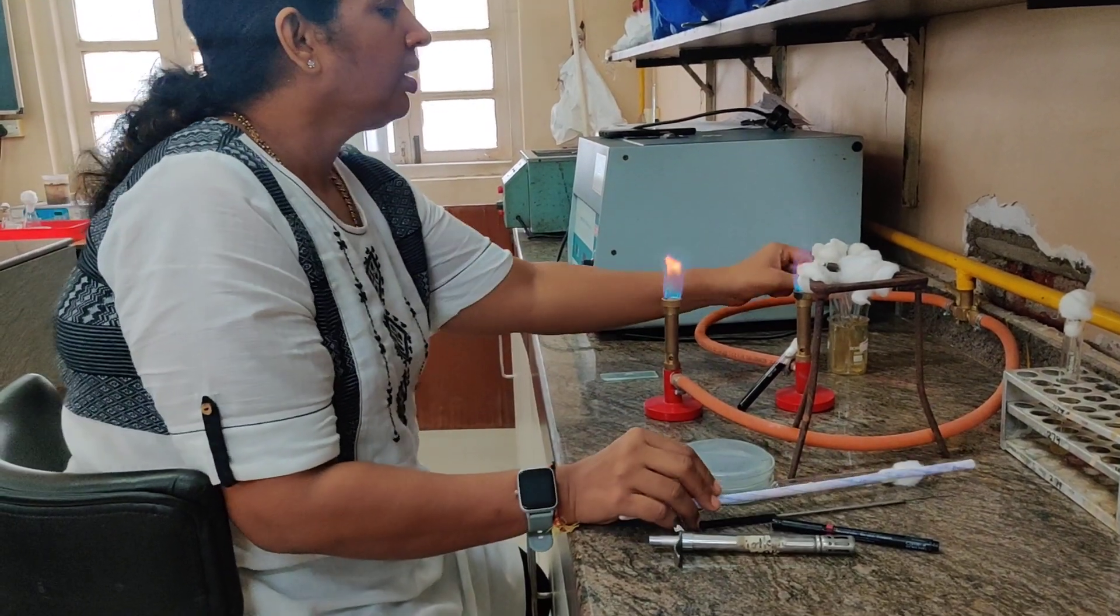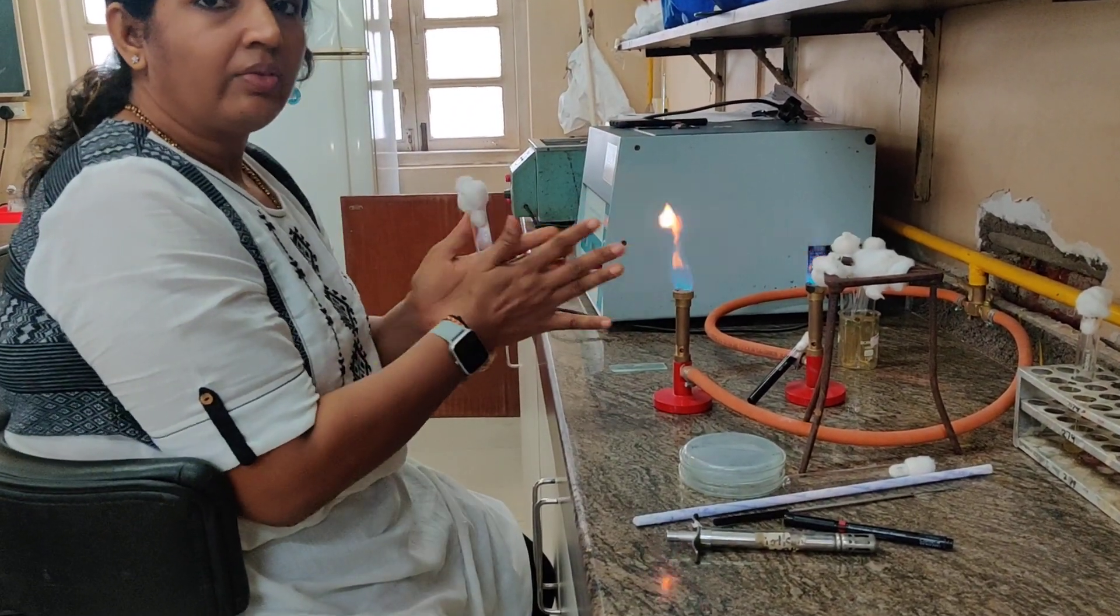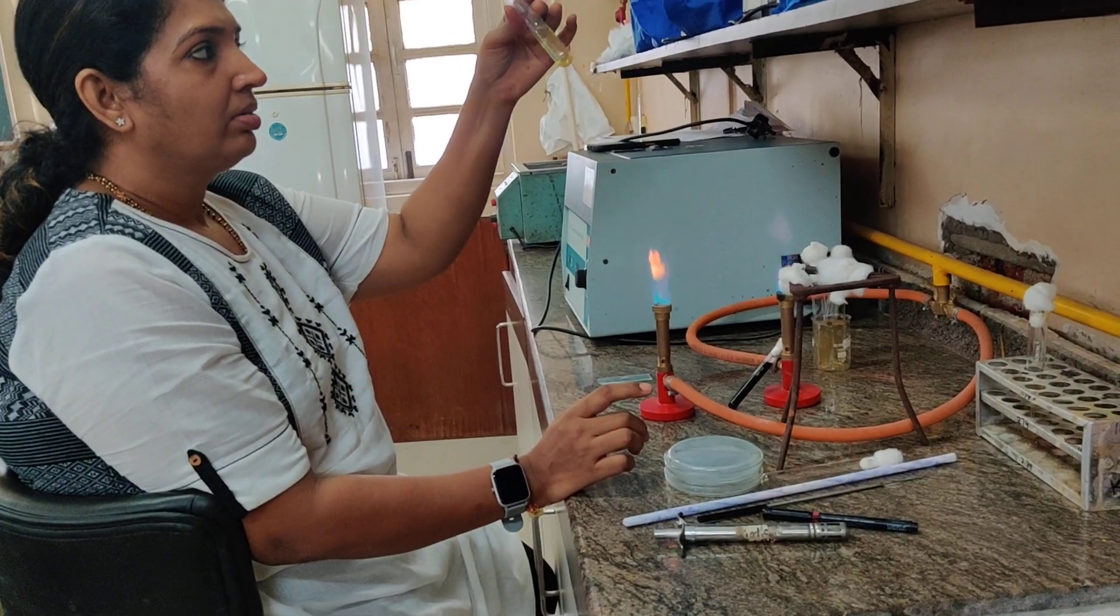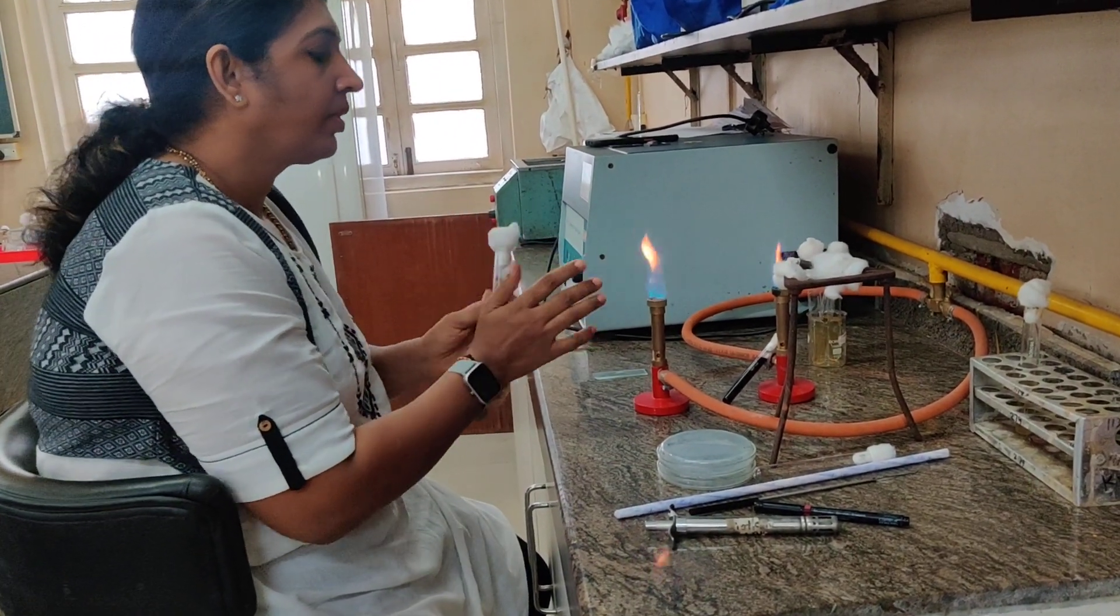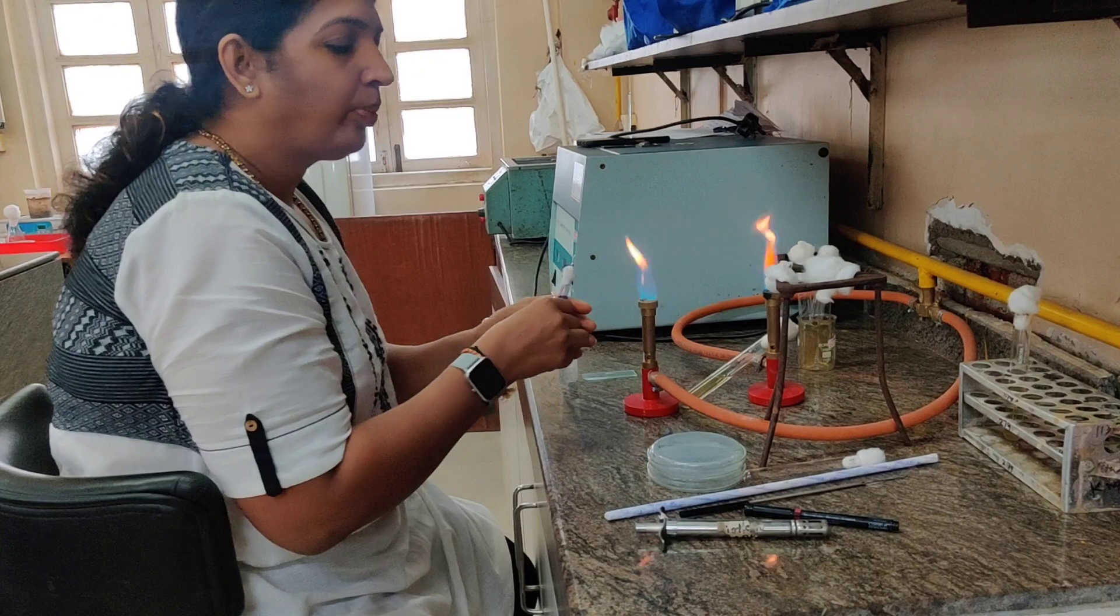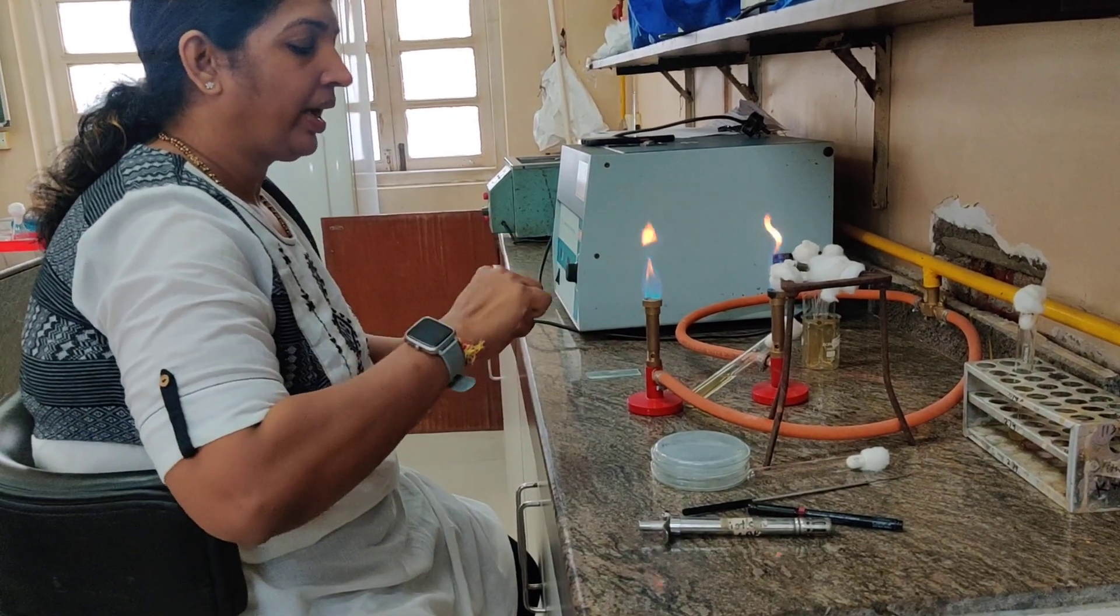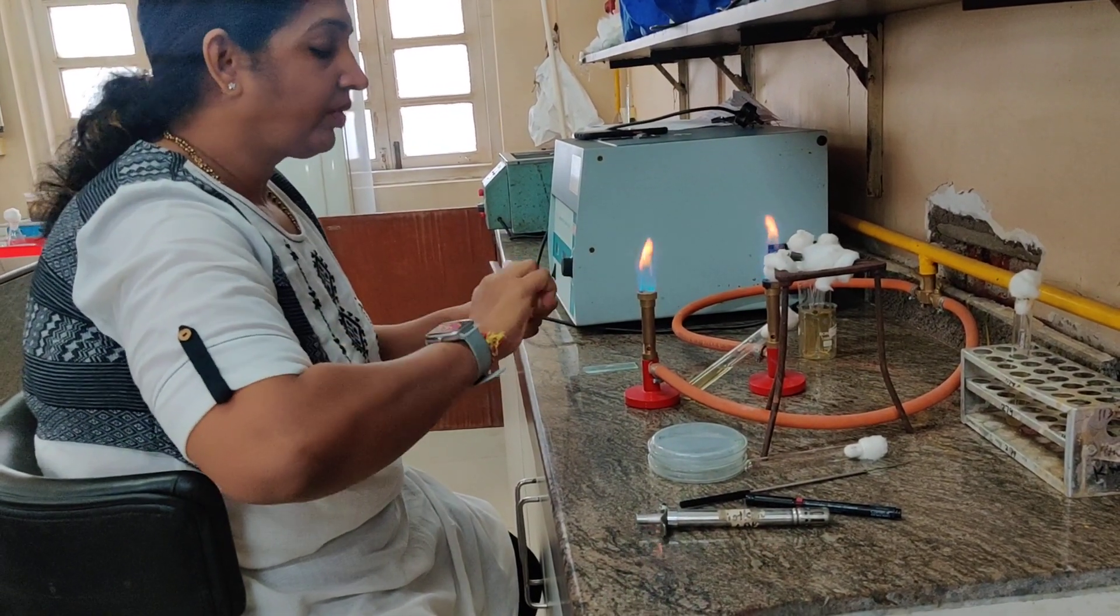To begin with the technique, we need a 10 ml nutrient agar butt which is molten. To this we are going to add 0.2 ml of crystal violet dye to create a gradient of the crystal violet.